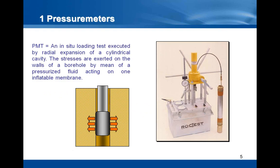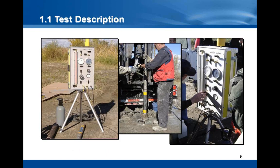The pressure meter test consists in loading the ground by means of a cylindrical probe and by measuring the ground response to this loading. The stresses are applied on the ground with pressurized fluid, typically nitrogen or water. This fluid is acting via an inflatable membrane which is covering the pressure meter probe. You can see a pressure meter on this slide. The picture at the left shows a control panel with various valves, dial gauges, and pressure regulator, which allows the operator to control and to read pressures and radial expansion of the probe during a test. You can also see the compressed gas cylinder for applying pressure and the probe to be inserted into the ground, as well as the tubing connecting the control panel and the probe.